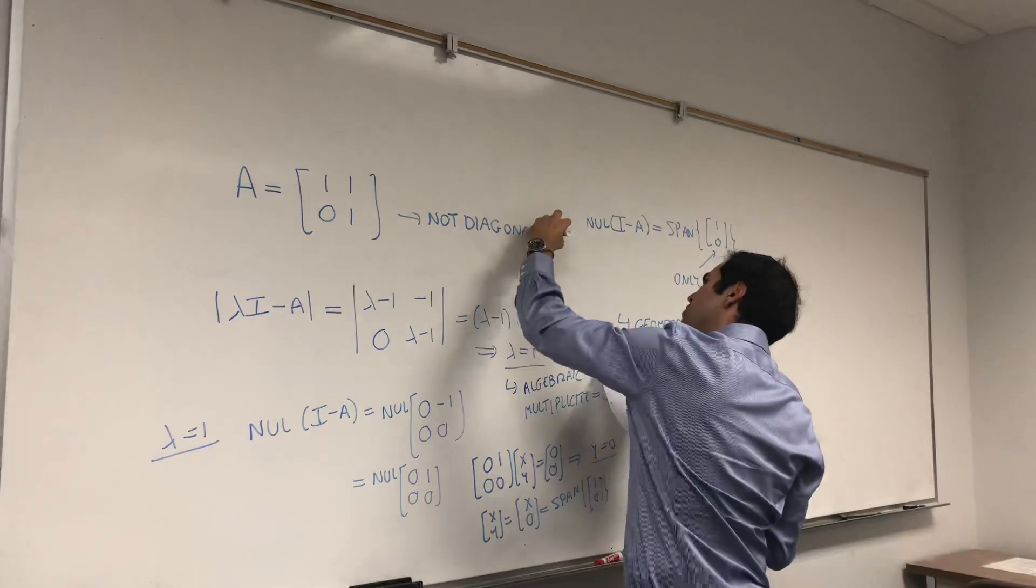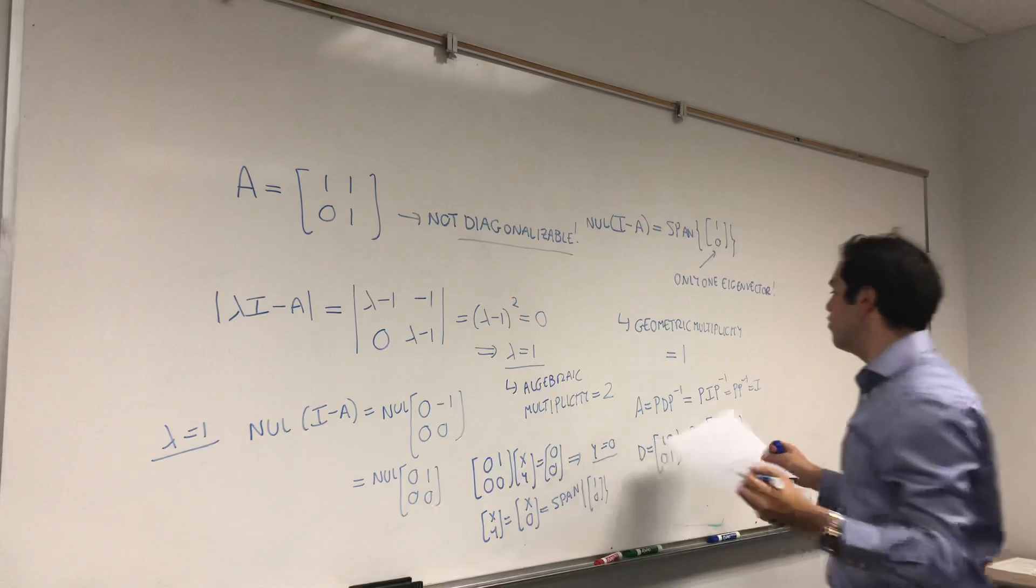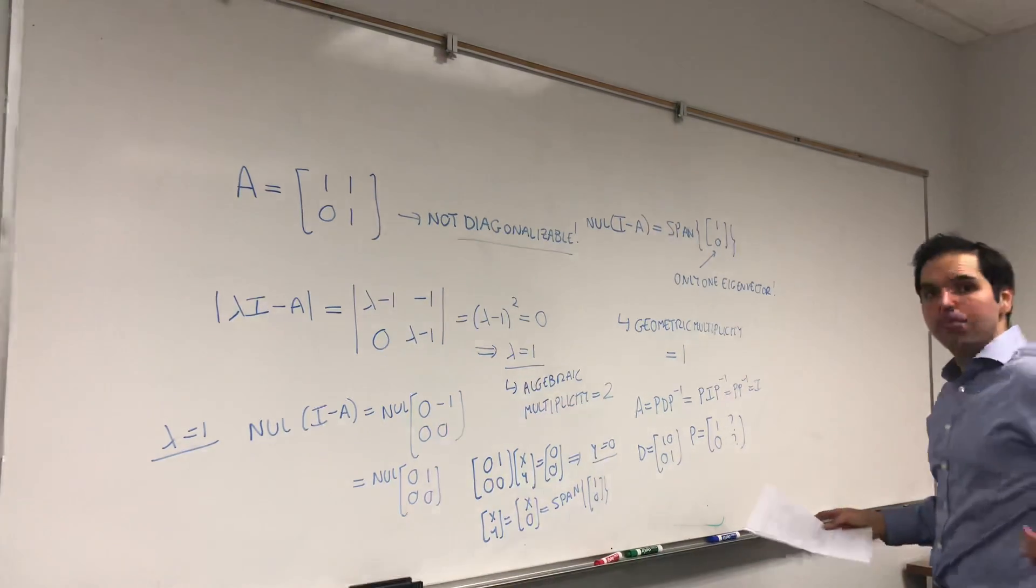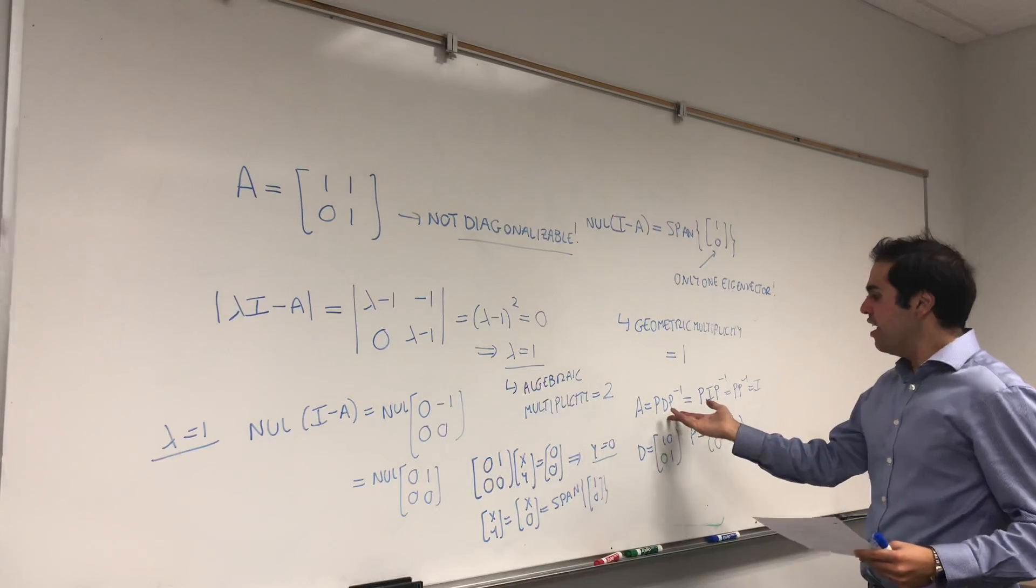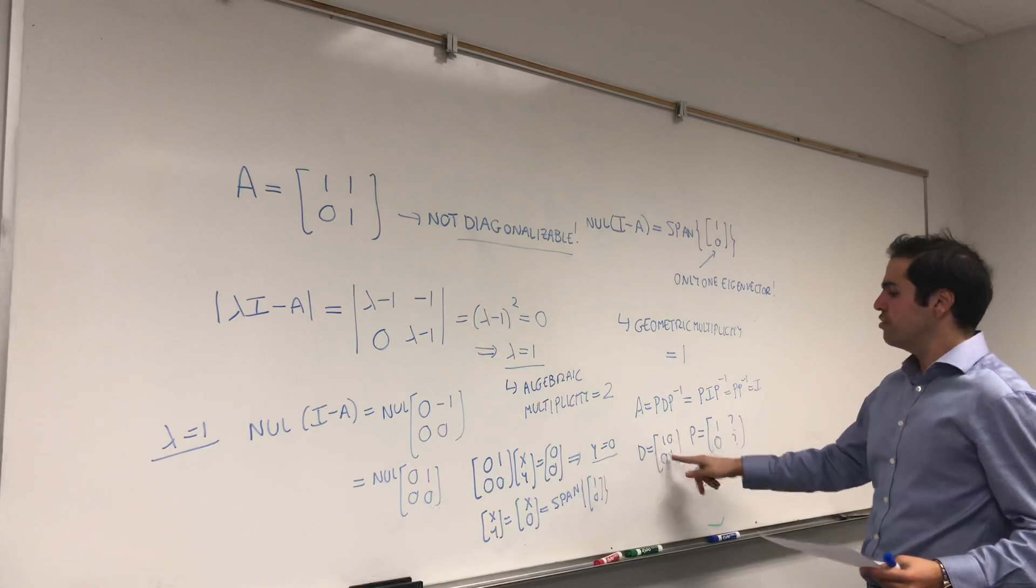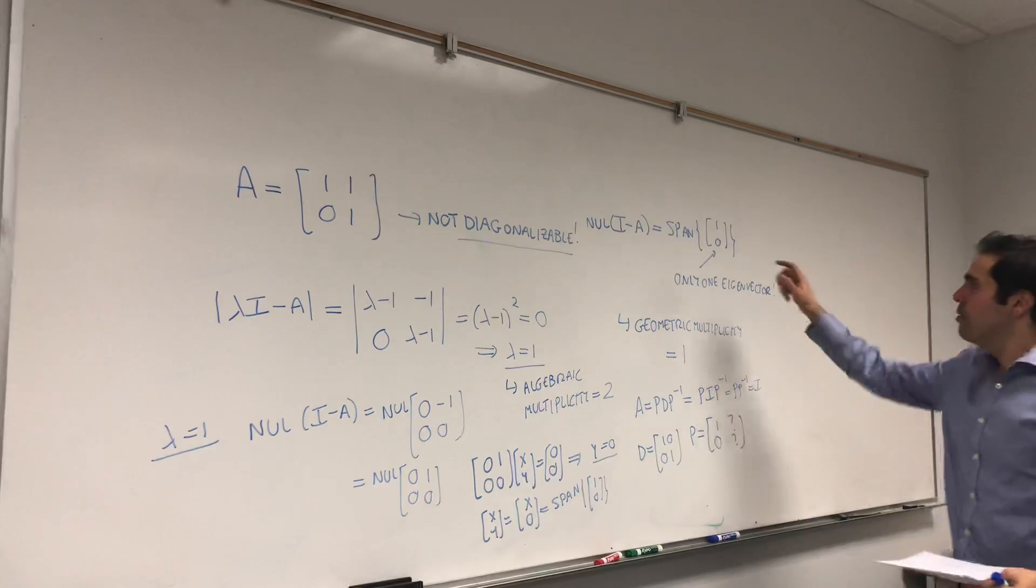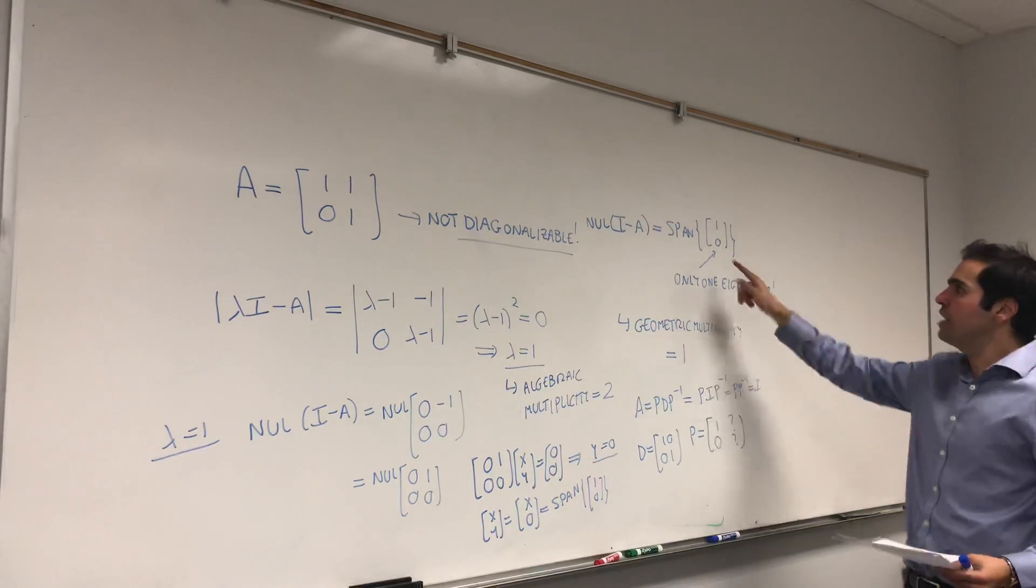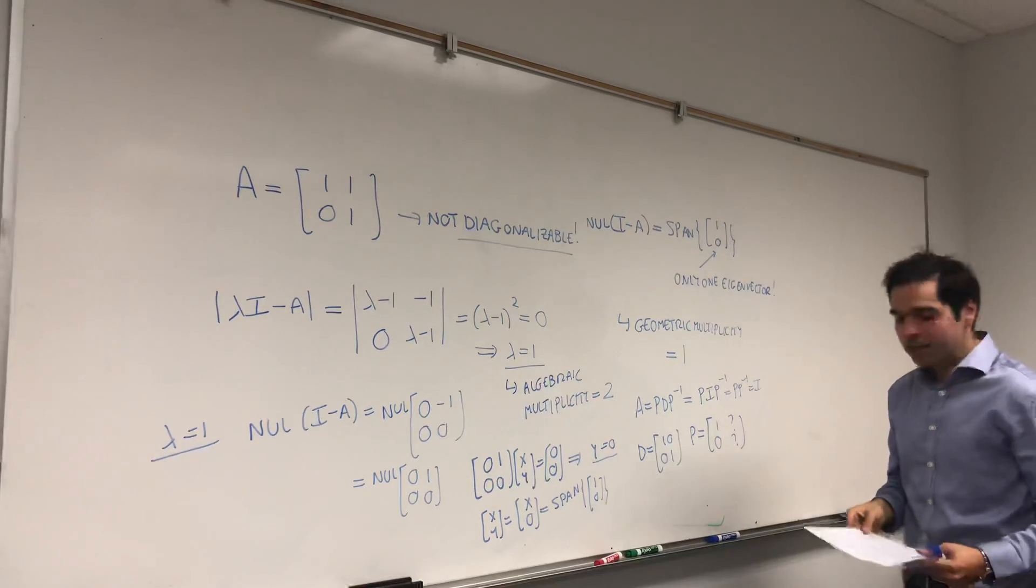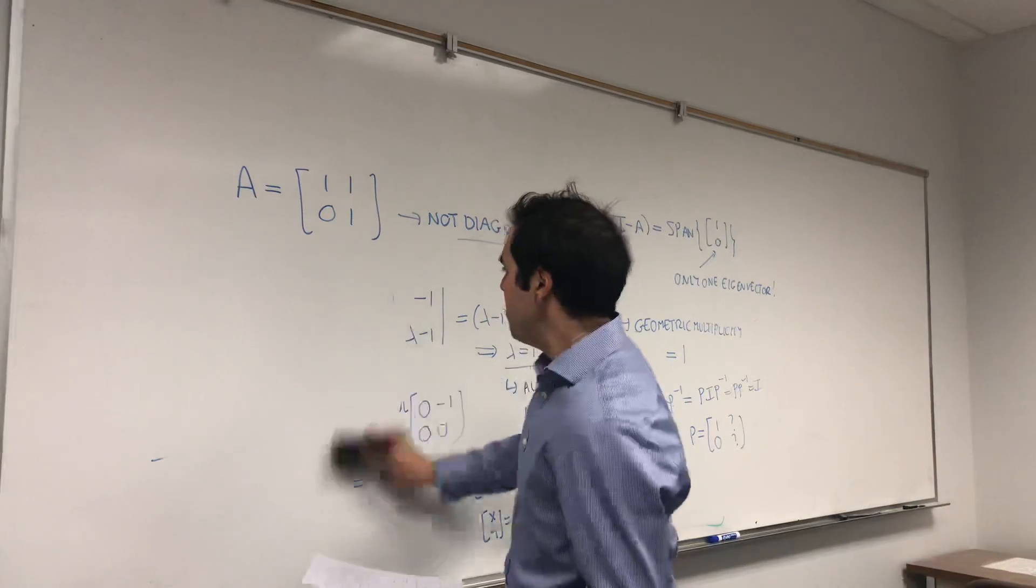So you cannot put it of the form A equals to PDP inverse. And this is basically a proof because if you can write this, you can show that D has to be the matrix of eigenvalues, P has to be the matrix of eigenvectors, but there's no way to get a matrix with linearly independent columns if their eigenspace is just one-dimensional.